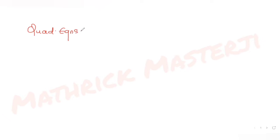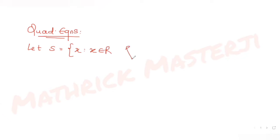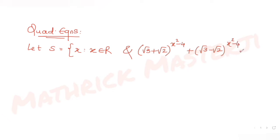Today's question is from the topic of quadratic equations. The question gives us a set S defined as the set of all x belonging to real numbers R, satisfying the equation: (√3 + √2)^(x²−4) + (√3 − √2)^(x²−4) = 10.